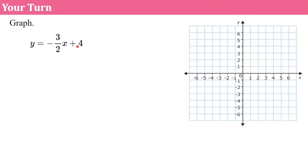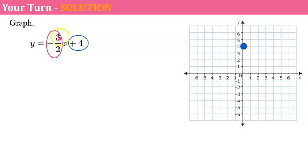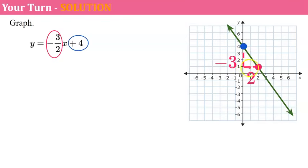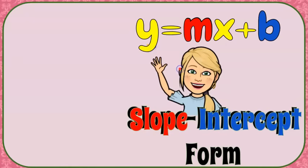Your turn — graph this line and come back when you're ready to check your work. Welcome back. We identify the y-intercept first and plot a point there. We use our slope to rise and run. Our slope is negative, so I rise negative 3 — going down 1, 2, 3 — then run positive 2 and plot our point, then connect. If the slope is negative, it's falling left to right. It crosses the y-axis at 4 and has a slope of negative three-halves. That is how you understand slope-intercept form, identify slope and y-intercept, and graph the line.